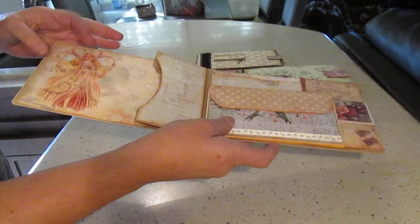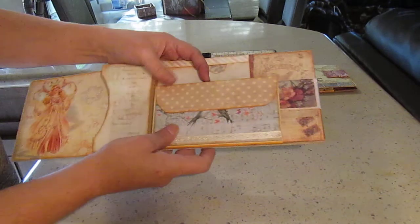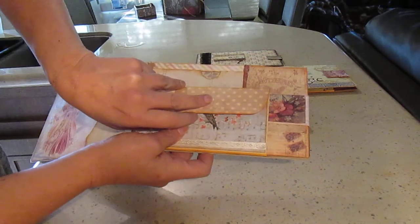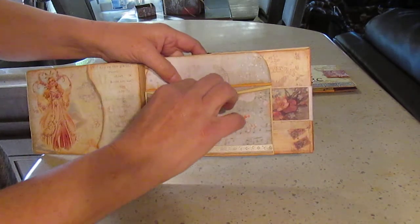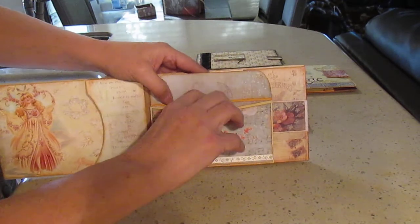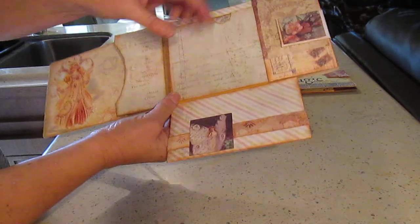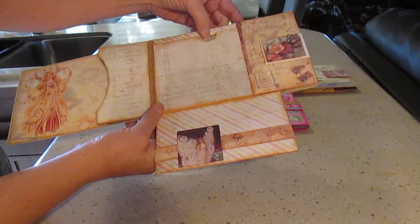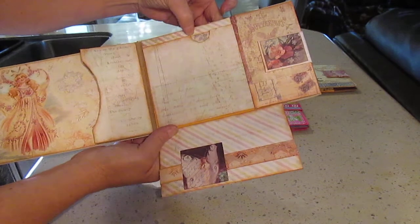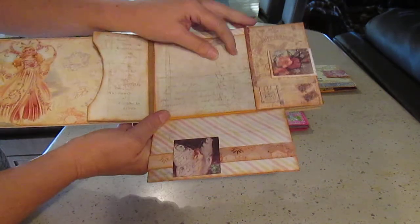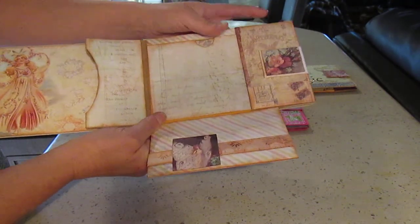And then you can put lots of things in there. Here you have the envelope, the top part of the envelope. So it's a pocket here. And it opens like this. I made a belly band here. And you have a pocket here, another pocket here, and a pocket here. So they're cute.